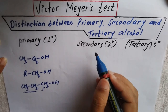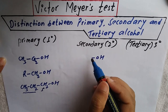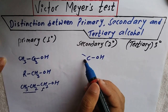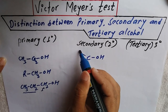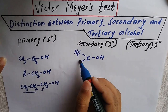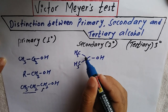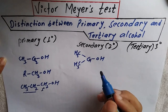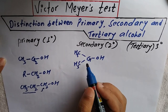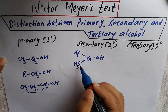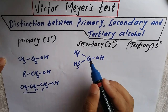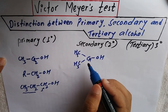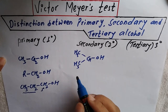In case of secondary alcohol, the OH-bonded carbon is bonded with two alkyl groups. For example, CH₃CHOHCH₃ — this carbon contains four bonds: one OH, one H, and two carbons. So this is the two-degree alcohol. The OH-bonded carbon is bonded with two carbons, making it a two-degree carbon.